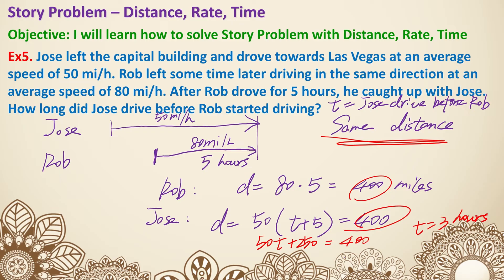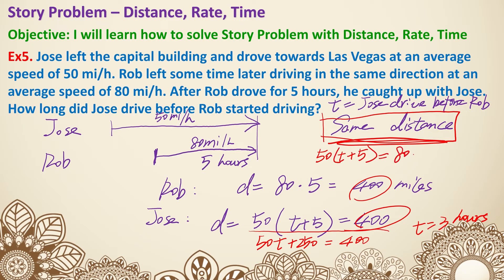The key for example five is using the same distance to set up an equation. As a single equation, it would be 50 times (T plus 5) equals 80 times 5. The left side is Jose's distance and the right side is Rob's distance, and they are equal.